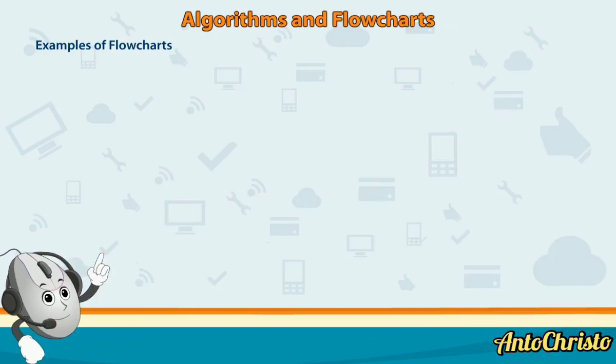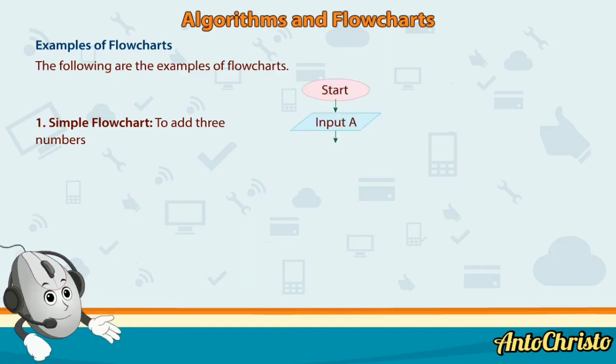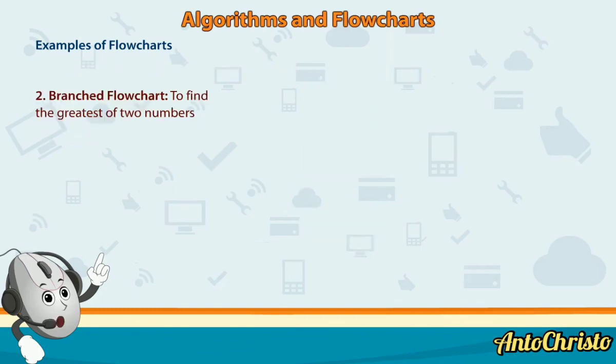Examples of flowcharts. The following are the examples of flowcharts. 1: Simple flowchart to add three numbers. Start. Input A. Input B. Input C. Sum is equal to A plus B plus C. Print sum. Stop.